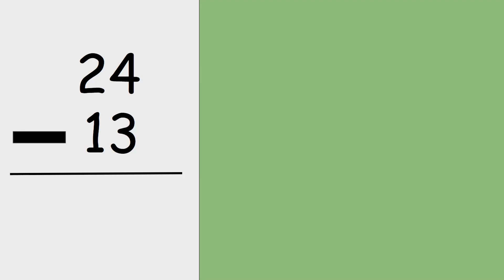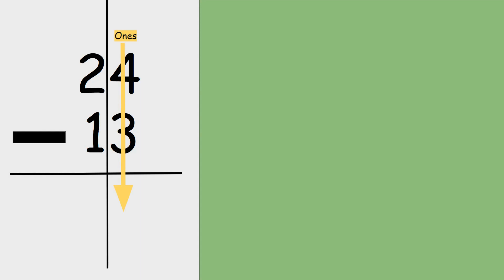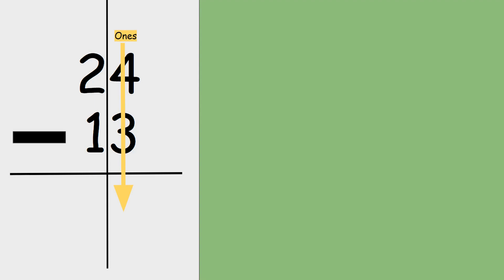A strategy I like to use is to draw a line separating my place value spots. To solve this question, we first subtract in the ones place value spot, and then we subtract in the tens place value spot. Remember: always start in the ones place value spot.